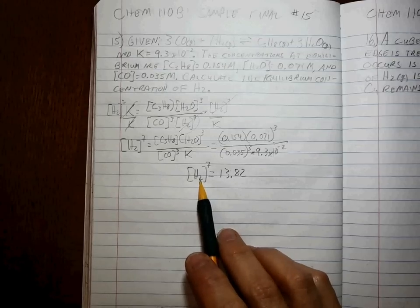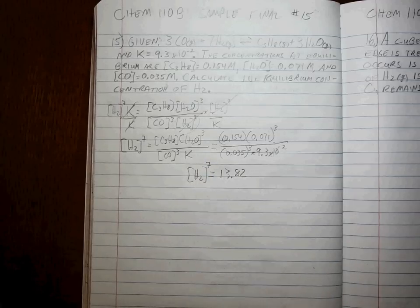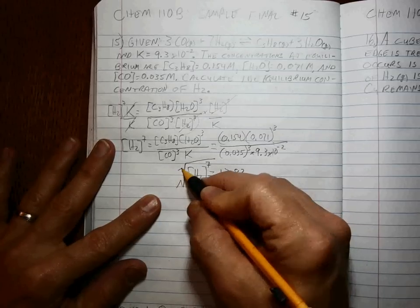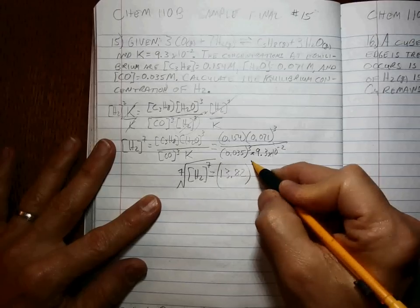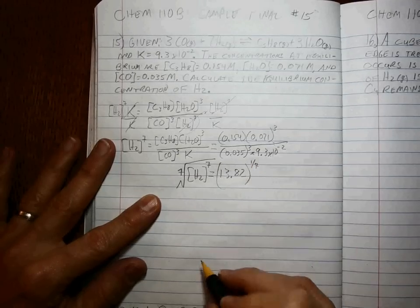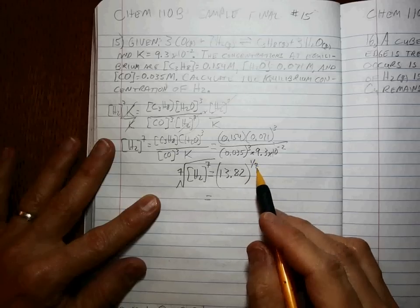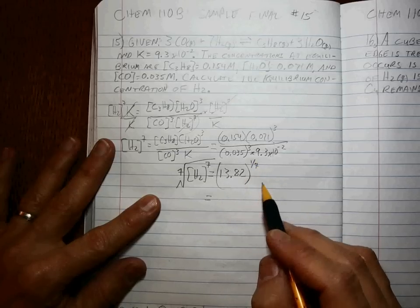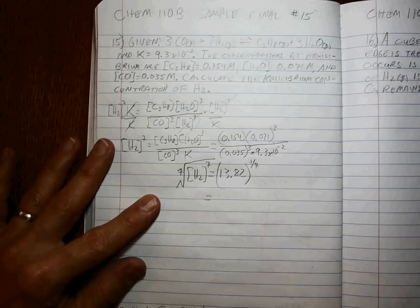It's equal to the hydrogen gas concentration taken to the seventh power. So how do we take care of that? Well, we have to take the seventh root of both sides, which is the same as taking it to the 1/7th power. Taking 13.82 to the 1/7 power is easy: 13.82 caret parentheses 1 divided by 7 close parentheses, hit equals.